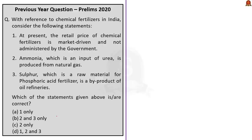Moving to the second question. With reference to chemical fertilizers in India, consider the following statements. Statement 1: At present, the retail price of chemical fertilizer is market-driven and not administered by the government. Statement 2: Ammonia, which is an input of urea, is produced from natural gas. Statement 3: Sulphur, which is a raw material for phosphoric acid fertilizer, is a by-product of oil refineries. Which of the statements is or are correct?